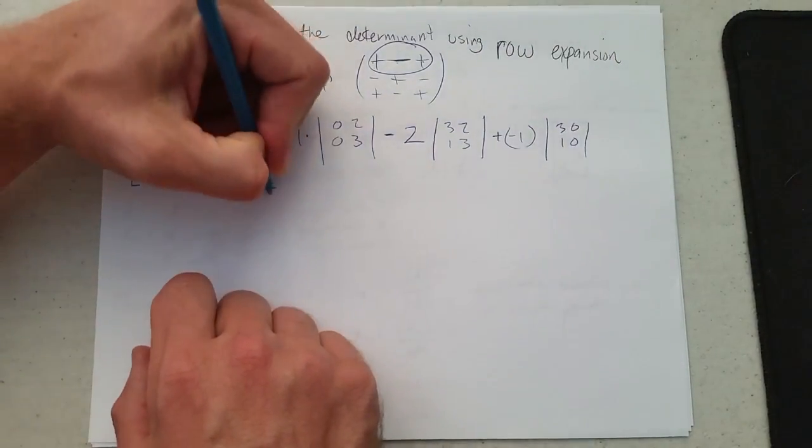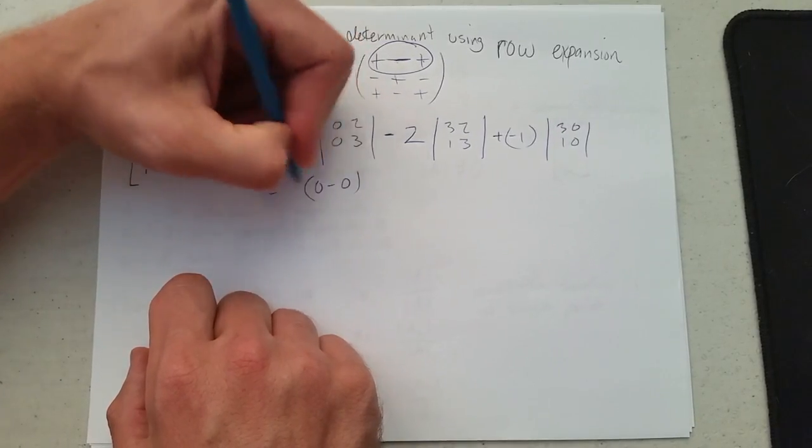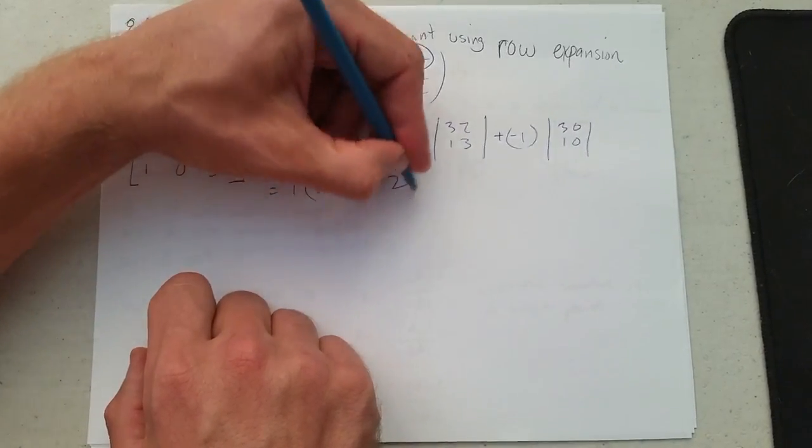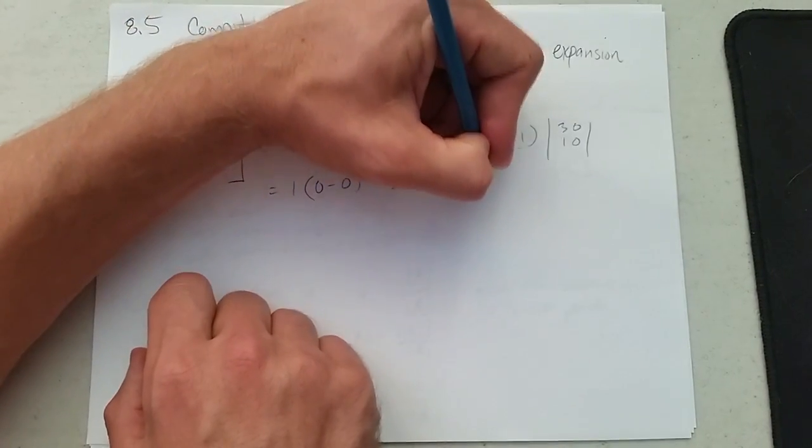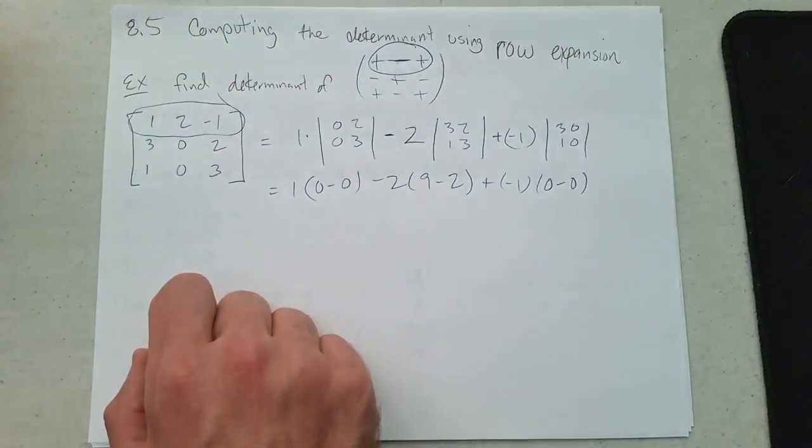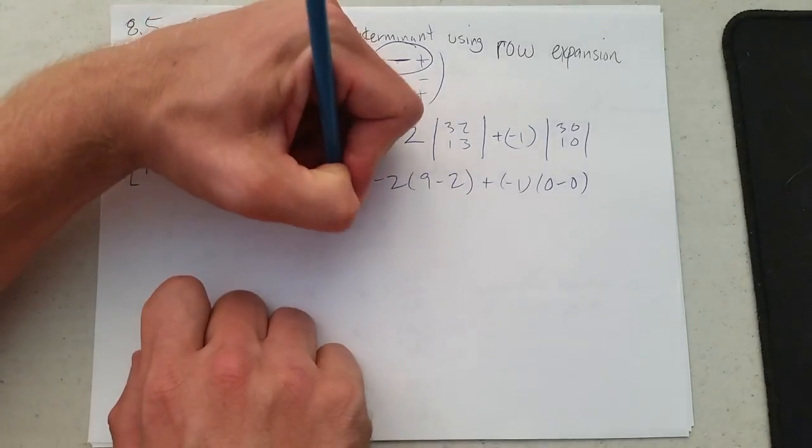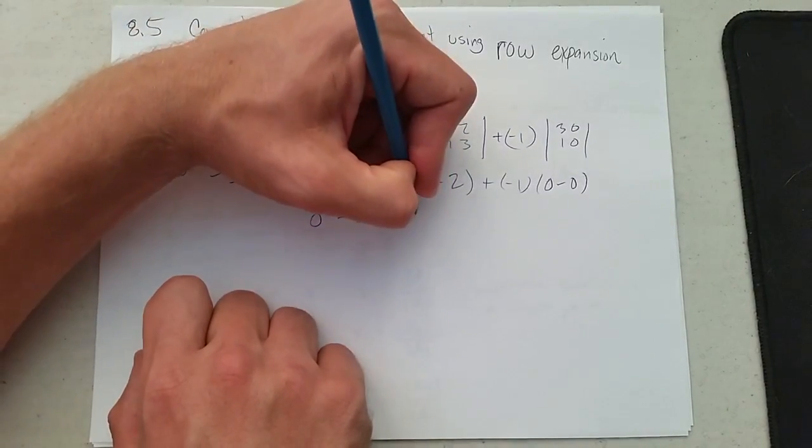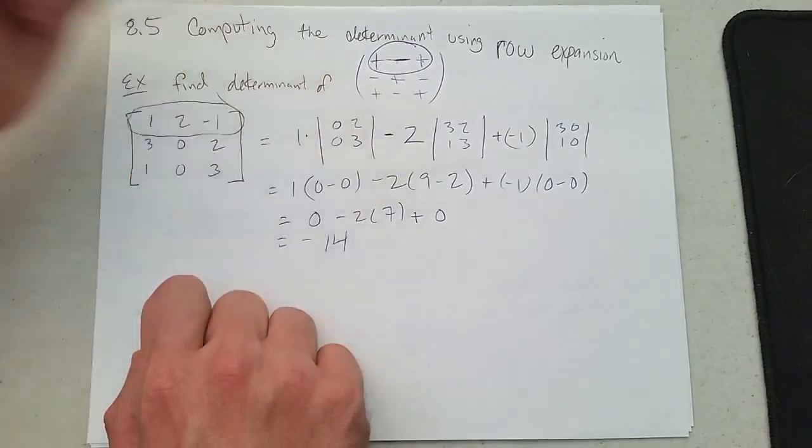Now, 2 by 2 determinants, we saw what those were. So we have 0 minus 0, times 1 minus 2. Times 3 by 3 is 9 minus 2, plus negative 1, 0 minus 0. So a lot of these are 0s. And we have 0 minus 2 times 7 plus 0 equals negative 14.